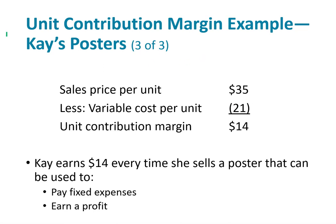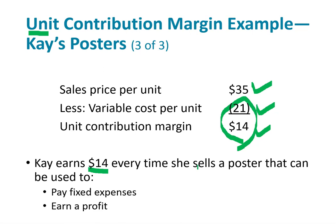If you look at the unit contribution margin, that's the sales price per unit minus the variable cost per unit, which gives you your contribution margin per unit. Kay earns $14 every time she sells a poster. That $14 can either be used to pay off fixed expenses, and once they're paid off, it goes towards earning a profit.